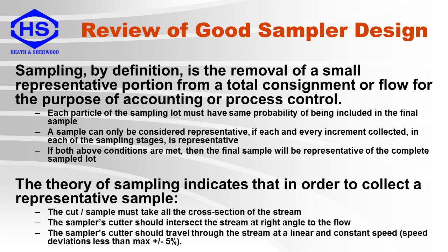Here is a quick review of good sampling. Sampling by definition is the removal of a small representative portion from a total consignment or flow for the purpose of accounting or process control. Each particle of the sampling lot must have the same probability of being included in the final sample. A sample can only be considered representative if each and every increment collected in each of the sampling stages is representative. The theory of sampling indicates that the cut or sample must be taken across the complete section of the stream. The sampler's cutter should intersect the stream at right angles to the flow and travel through the stream at a linear and constant speed — the maximum speed deviation should be less than five percent.